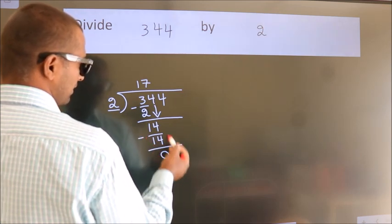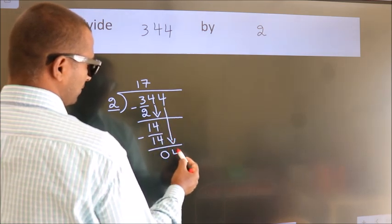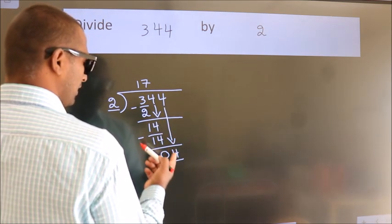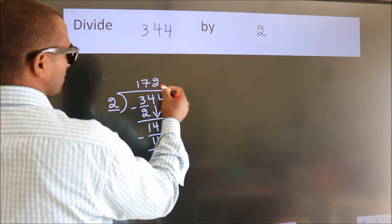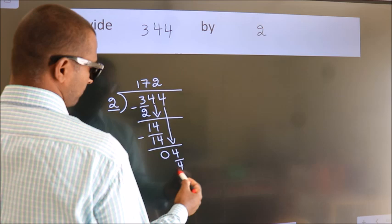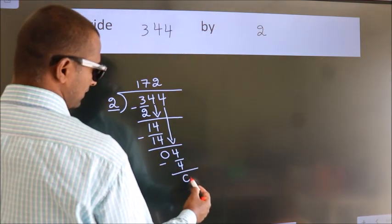After this, bring down the beside number. So 4 down. So 4. When do we get 4? In 2 table. 2 2s, 4. Now we subtract. We get 0.